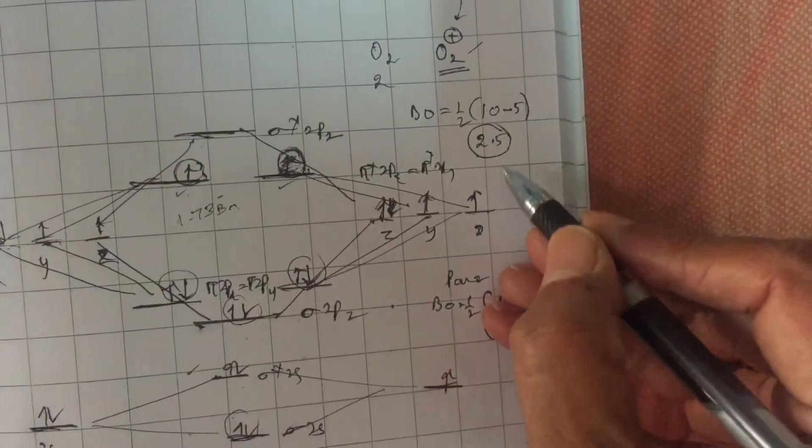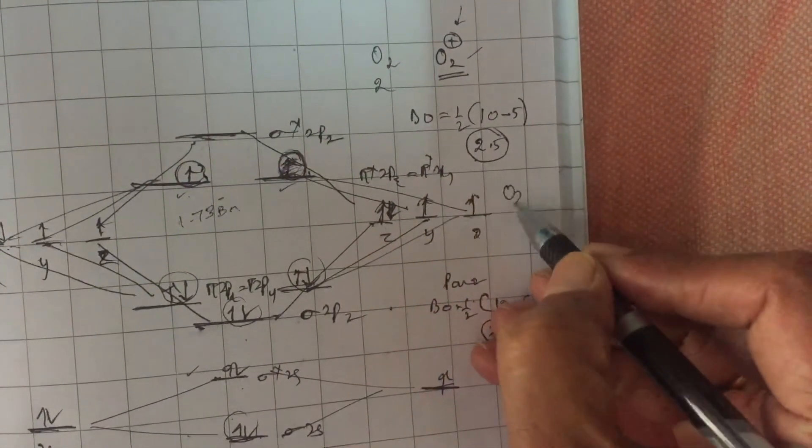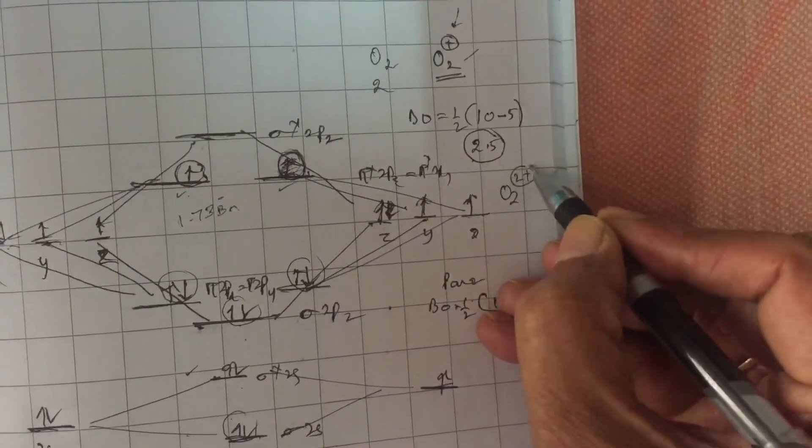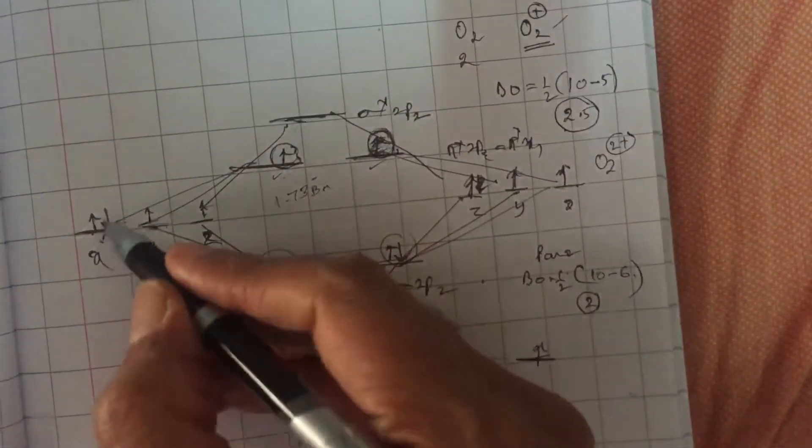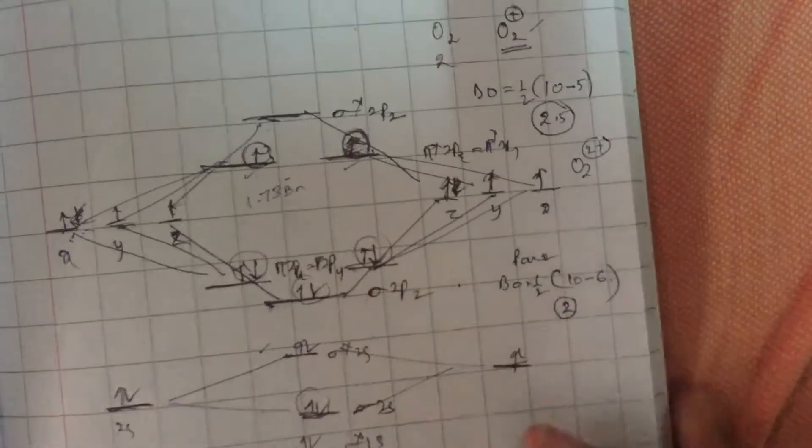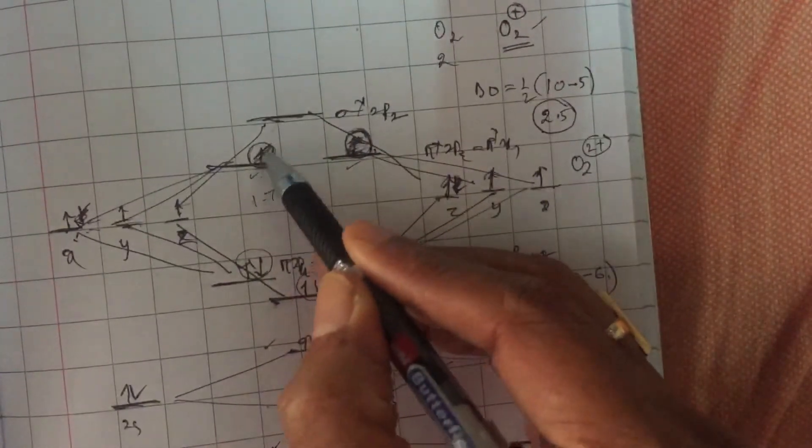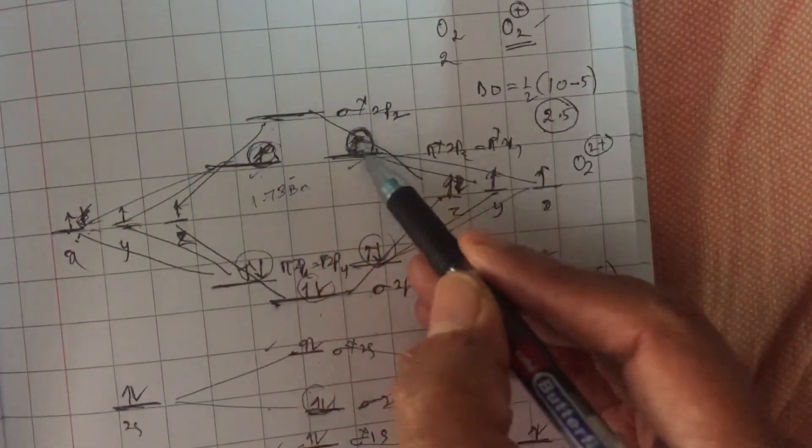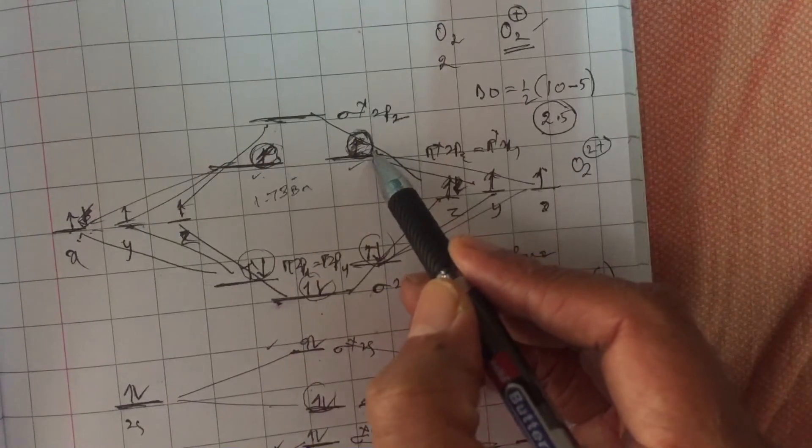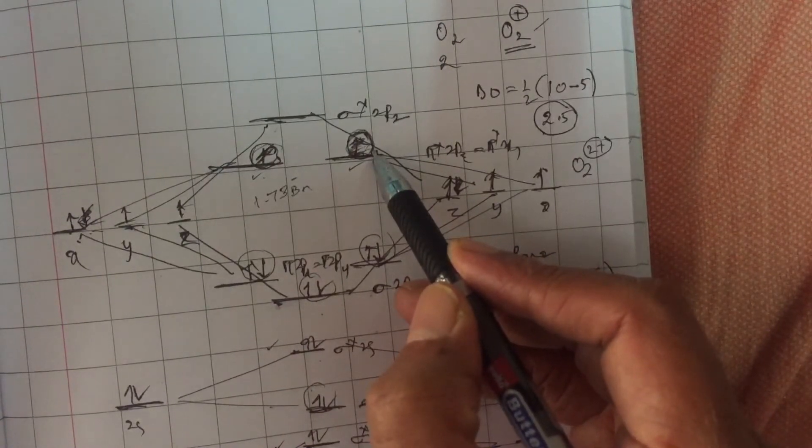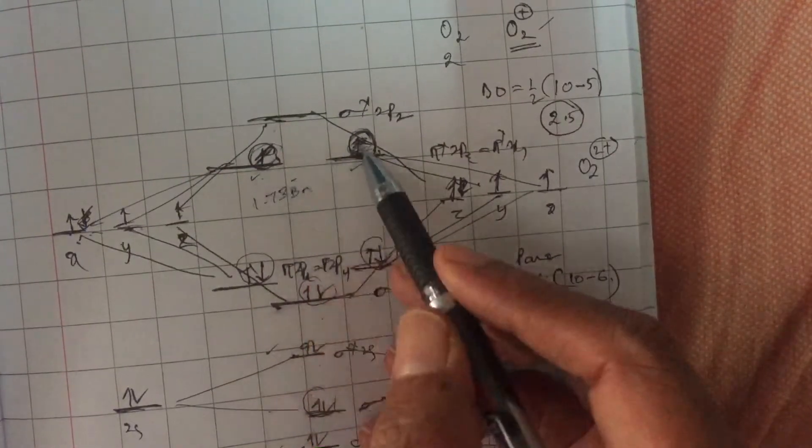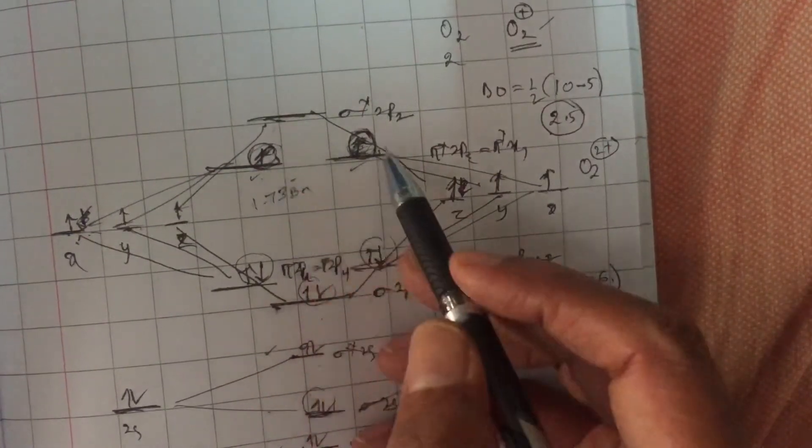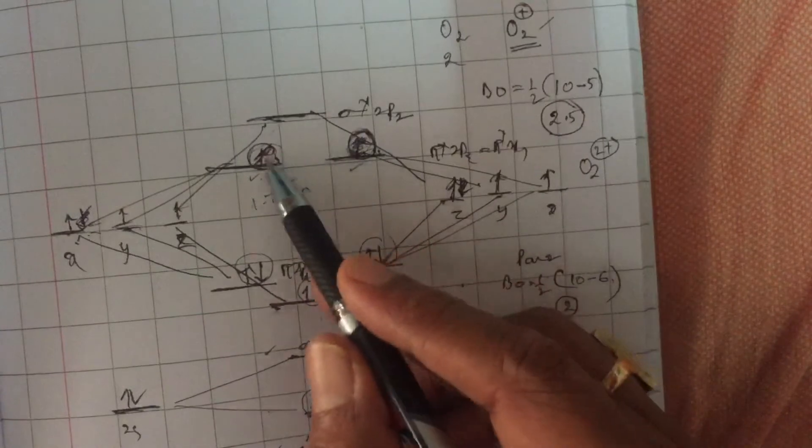Similarly, if you are looking at O2²⁺ ion, it is formed by loss of one more electron, even from this oxygen. Suppose one more electron is lost. Now you are removing one more electron. So you have removed both the electrons from anti-bonding 2px, 2py, pi star molecular orbitals. You are removing these electrons.